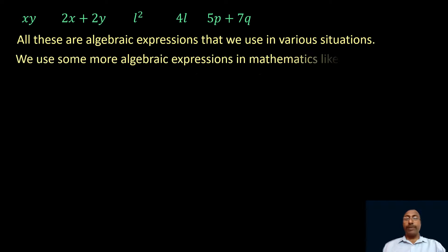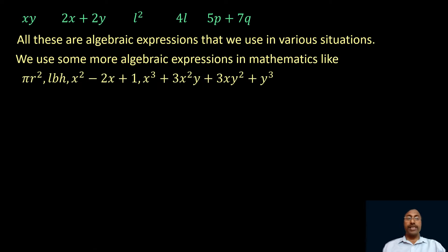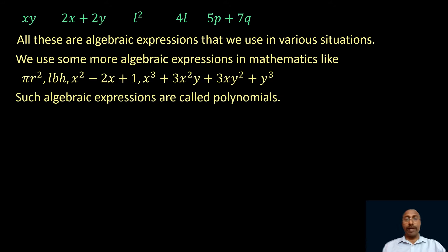We use more algebraic expressions in mathematics like πr square, LBH, x square minus 2x plus 1, x cube plus 3x square y plus 3xy square plus y cube, etc. Such algebraic expressions are called polynomials. The algebraic expressions of the form a·xⁿ, where a is a real number and n is a non-negative integer, are called polynomials.